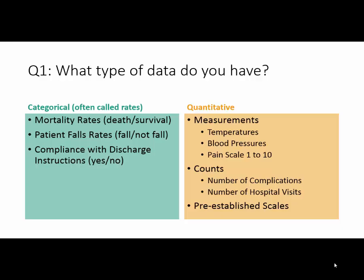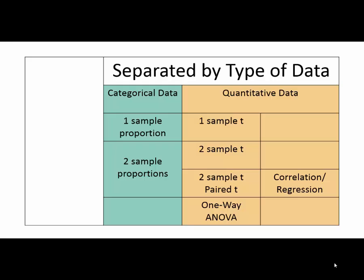In healthcare, when you talk about those proportions, you often call them rates. A patient falls rate is a proportion of the patient hours that involved falling — yes or no. A mortality rate is the proportion of procedures that ended in death; the data is either die or survive, which is categorical data. So I've separated our different tests into two groups: categorical and quantitative — giving us our first major separation.